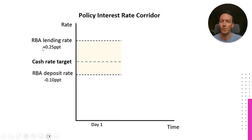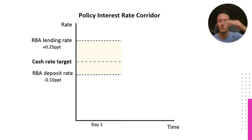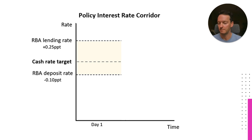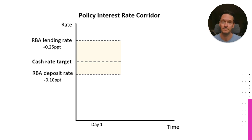You'll notice either side here you've got 0.25 percentage points above and 0.10 percentage points below — so it's not the same on either side. Some textbooks might say it's 25 either side, but it's 25 basis points on the top and 10 basis points on the bottom. So roughly speaking, that's where the cash rate — the price at which banks exchange with each other — settles at around the cash rate target.